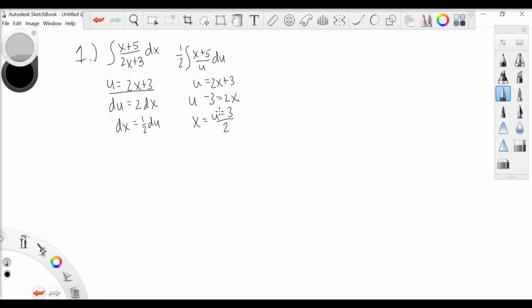So using that to plug back into our integral, we can simplify this further as one-half the integral of u minus 3 over 2 plus 5, all over u du. So now we just need to do a little bit of algebra.